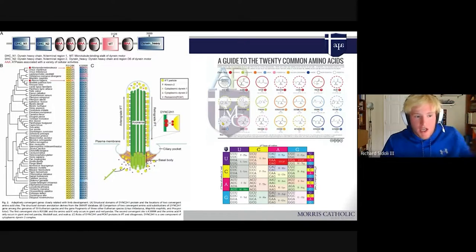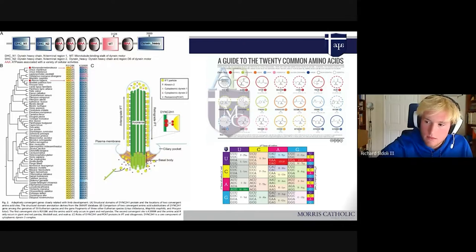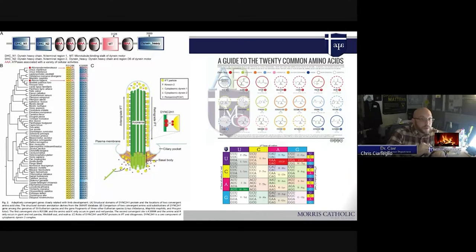That changes then the functionality of the actual protein. They're amino groups and they're charged. A lysine is way less charged than an arginine is. Arginine has three different amine groups that are charged, whereas lysine only has one. If you change the charge of one amino acid, it's going to change the way it folds.